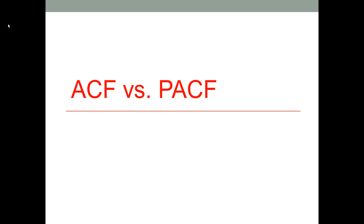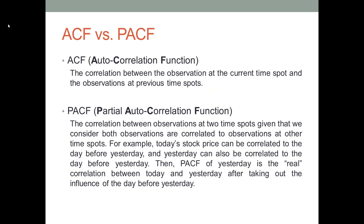How many days we need to look back in order to predict the current value. The full name of ACF is autocorrelation function. This factor measures the correlation between the current value and values at previous time spots. For example, if we believe that today's stock price is correlated to yesterday, we can calculate an ACF value to measure how strong the two days are correlated. We can also calculate another ACF to measure today's stock price and the stock prices two days back, in order to show how strong these two days are correlated.